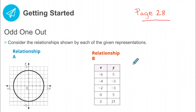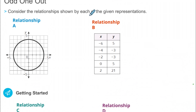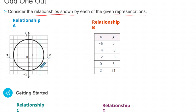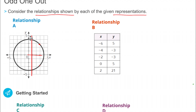Let's go back to page 28. We have four different relationships and the first one is a circle. If I draw a vertical line here, this helps me figure out if I have more than one output for each input. That's called the vertical line test. For the input value of 4, I have one output up on the circle and one output down on the circle — the vertical line hits the graph twice. So this is not a function; it's just a relationship.